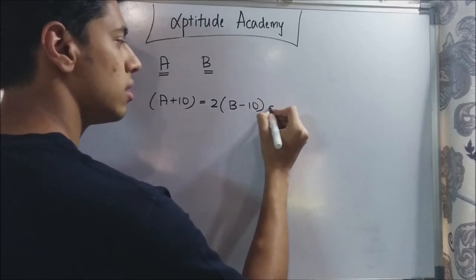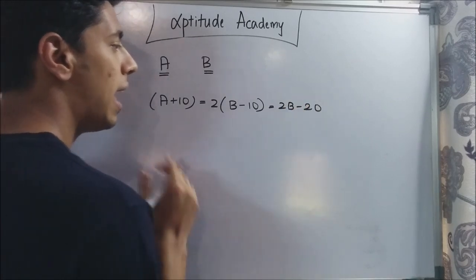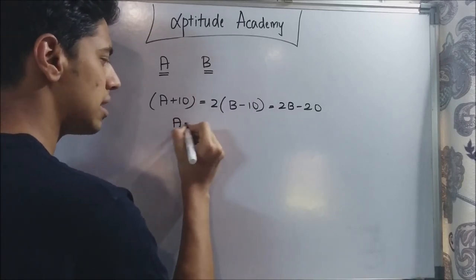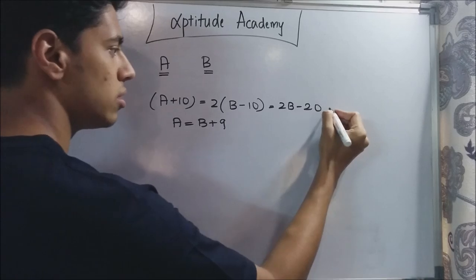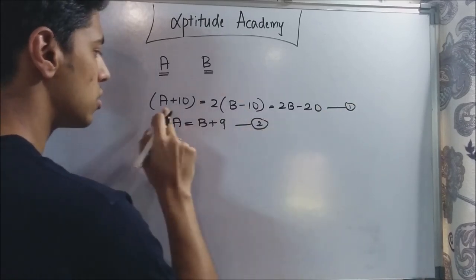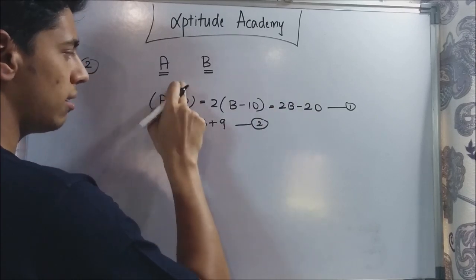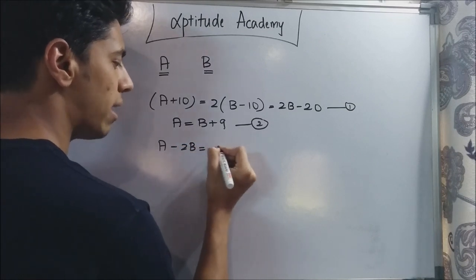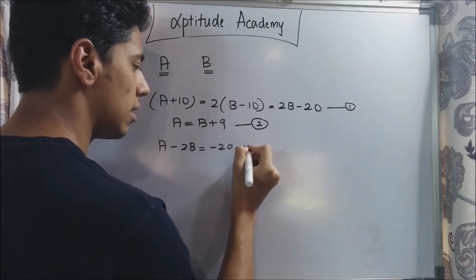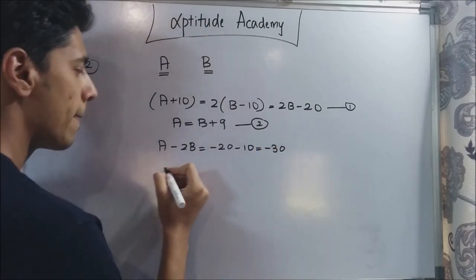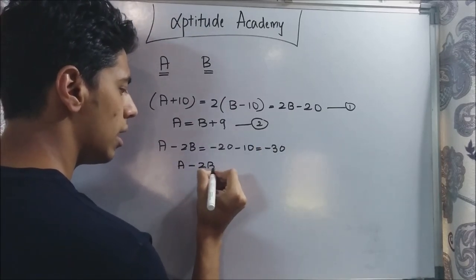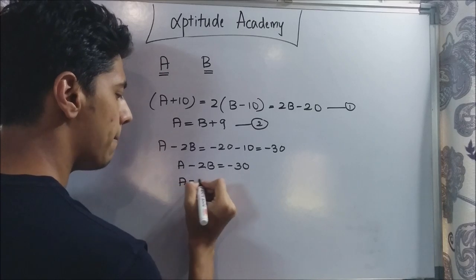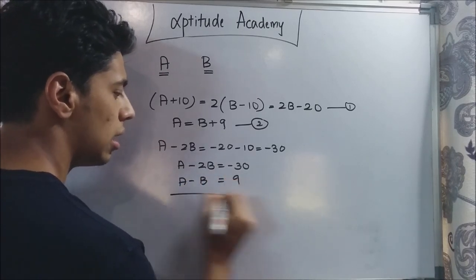Simplifying the first equation gives a minus 2b equals minus 30. The second condition is that A is nine years older than B, so a minus b equals 9. Now we have two equations: a minus 2b equals minus 30, and a minus b equals 9.